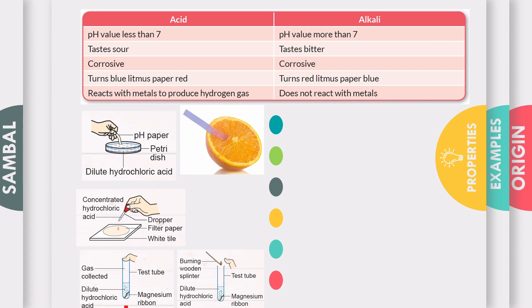For the corrosive test on alkali, you put a drop of concentrated sodium hydroxide solution on the filter paper. After a while, you can see the filter paper erodes and a hole is formed.